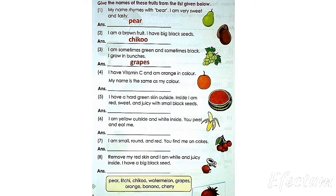Number 4: I have vitamin C and I am orange in color. My name is the same as my color. Hence the name of this fruit is orange.